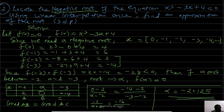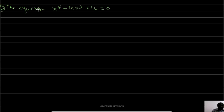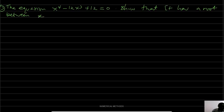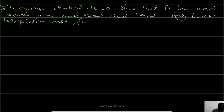Next is Example 3: The equation x⁴ - 12x³ + 12 = 0. Show that it has a root between x = 1 and x = 2. Hence, using linear interpolation once, find the root.